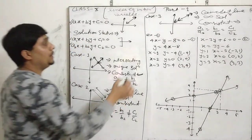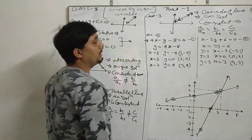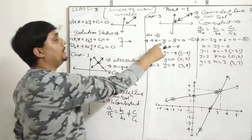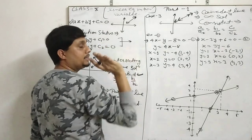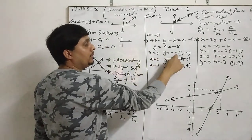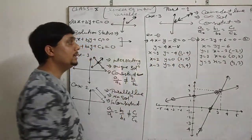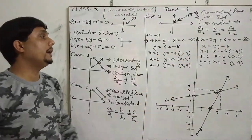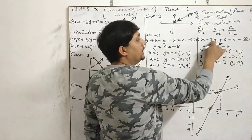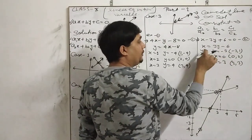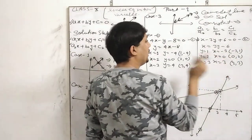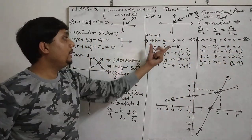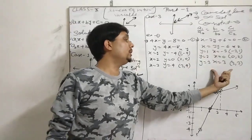Now we have two equations: 4x minus y minus 8 equals 0, and 3x minus 3y plus 6 equals 0. We rearrange to get y: for the first equation, x equals 1 gives y equals minus 4. We find 3 solutions for each equation — sets of x and y coordinate values.